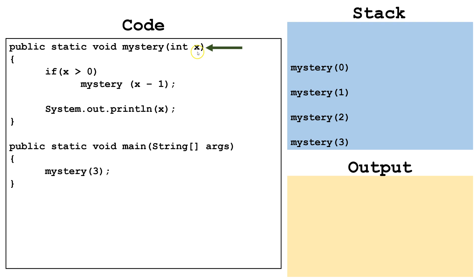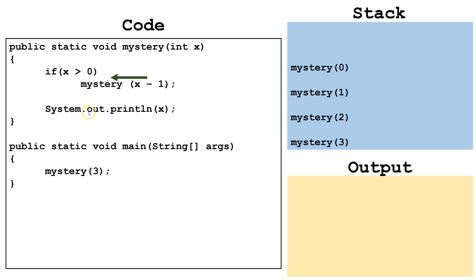We pass 0 to our parameter x. We check: is x greater than 0? In this case it is not. So we skip the recursive block and print out the value of x, which is 0, and that goes to our console. Now that we've finished this method, we pop it off the top of the stack.